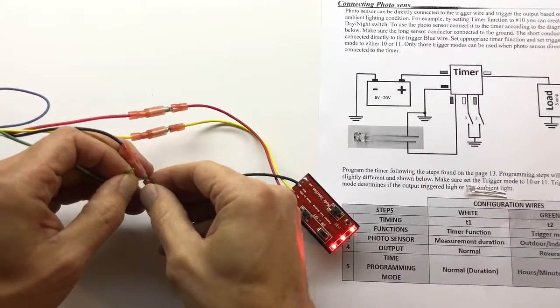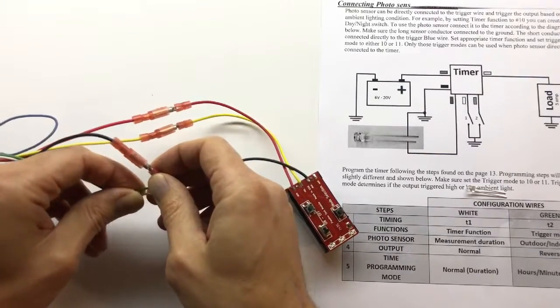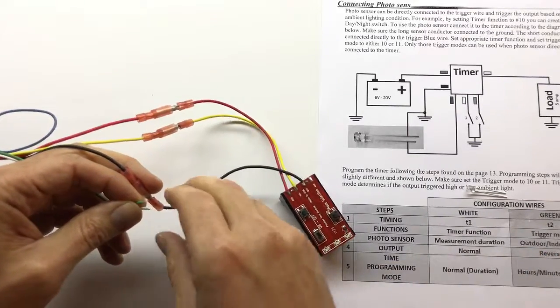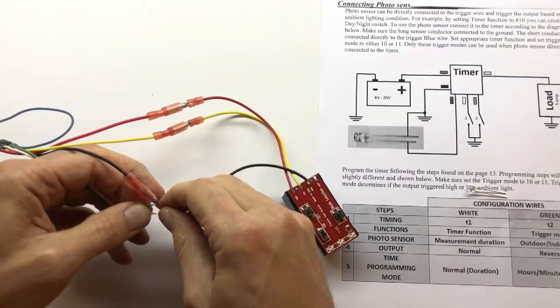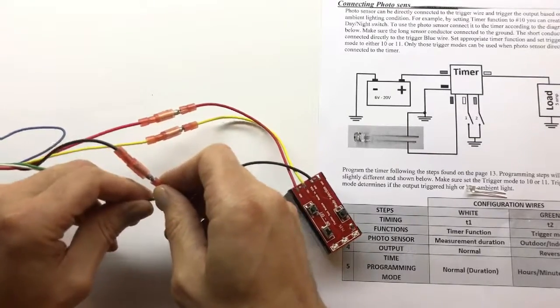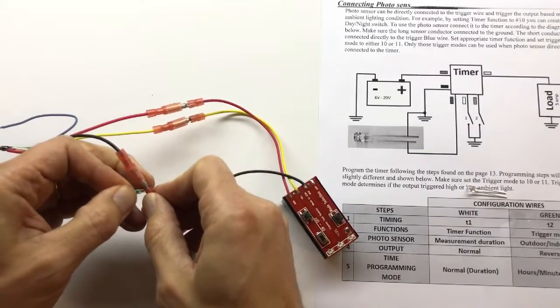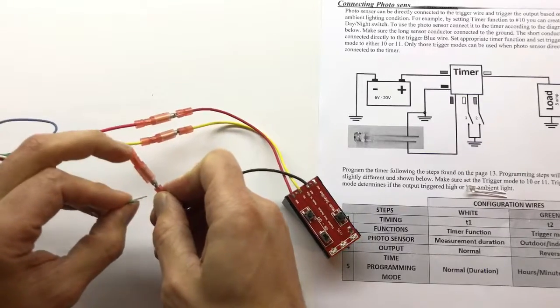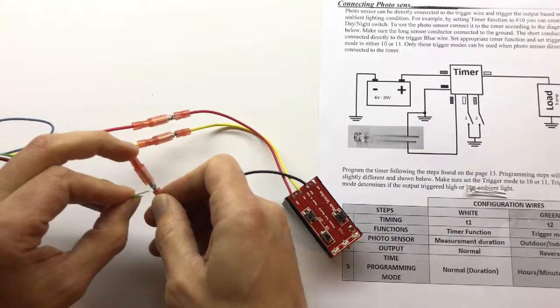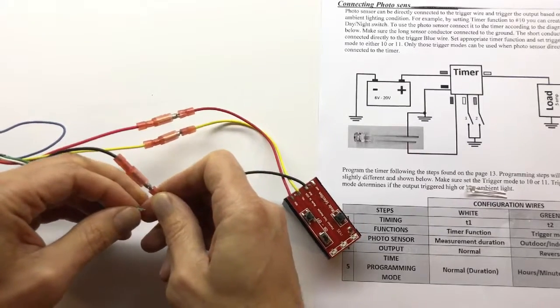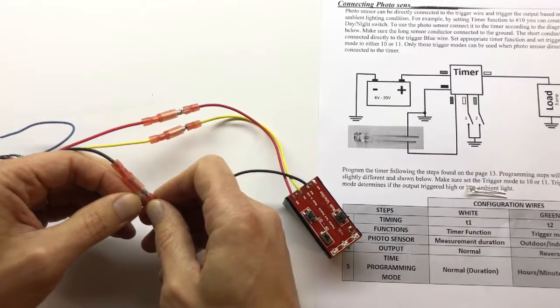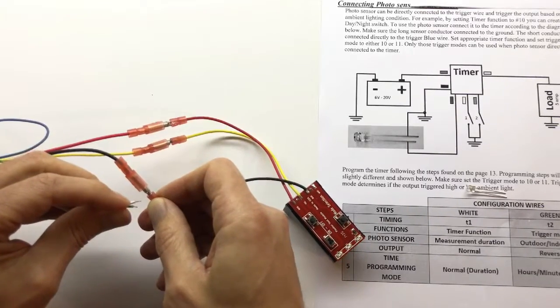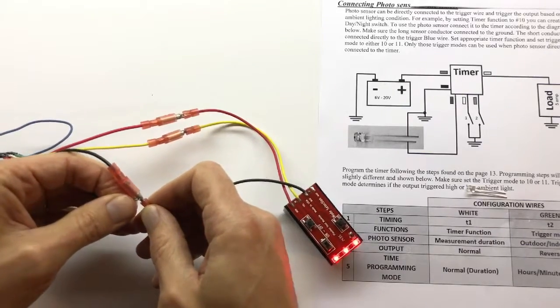So we're going to set it for a short time. So hold the white wire for two seconds or one second. Okay. And green wire is outdoor or indoor light. So outdoors is one, outdoors two. So I'm going to touch it once, twice. And we're going back to the next to output. I don't need to set it because it's set from the factory to normal, but I'm just going to set it to normal white wire and timing programming mode. So I go to the next menu and then white wire to set it to the normal mode. And that's it.